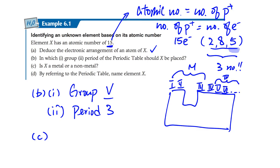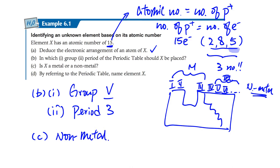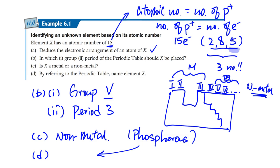Groups IV through VIII on the right side are generally non-metals, though Group IV may include semi-metals near the staircase boundary. Group V elements are non-metals. If you have memorized the first 20 elements, you'll recognize that the element with atomic number 15 is phosphorus — it is red or yellow in color, not shiny, and not a metal. Its symbol is P.